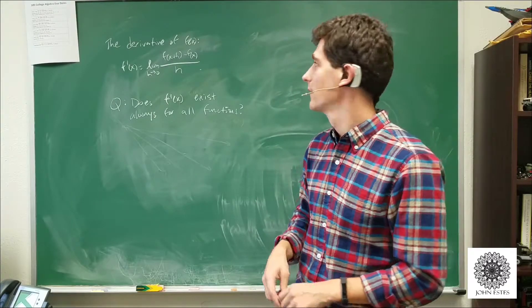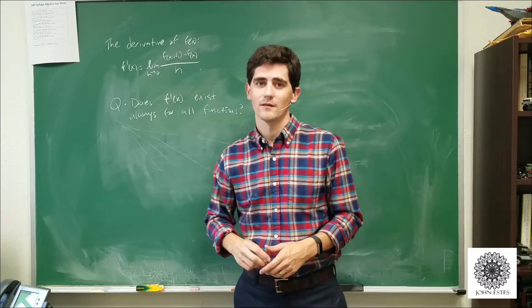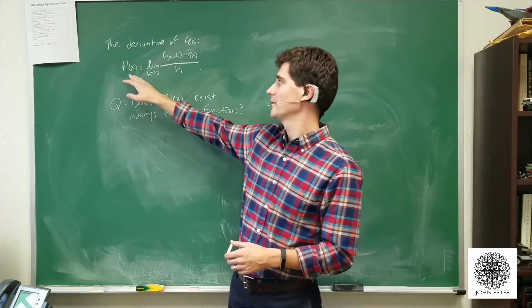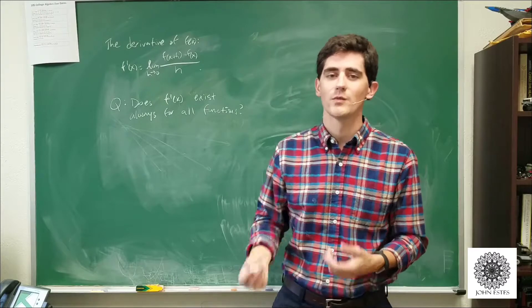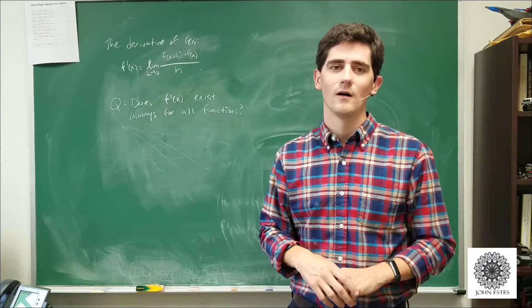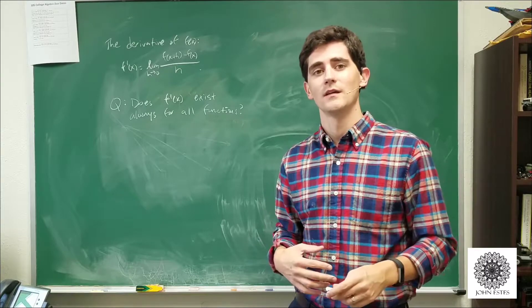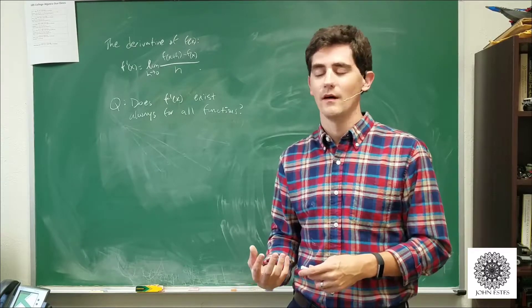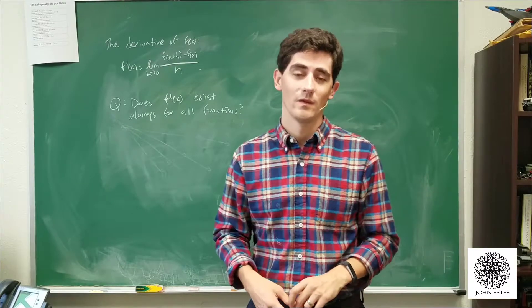I showed in another video that the derivative of f of x can be defined as f prime of x, which is the limit as h approaches 0 of f of x plus h minus f of x all over h. We get that from taking the limit of the slope formula that we learned from algebra.